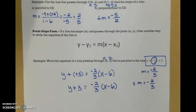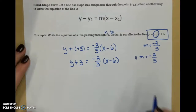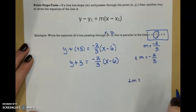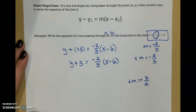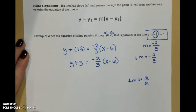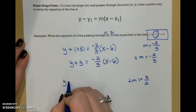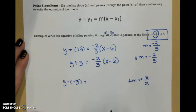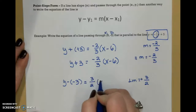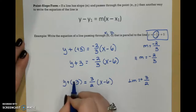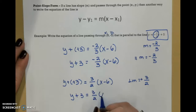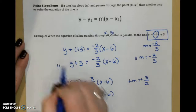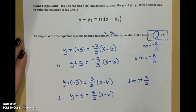My problem doesn't say to do this, but for practice let's also write the equation of the perpendicular line. My perpendicular slope would be the opposite reciprocal — I flip my fraction upside down and change the sign. It was negative, so it's going to be positive 3 over 2. If it goes to the same point, my points stay the same: y minus negative 3 equals 3 over 2 times x minus 6, which becomes y plus 3 equals 3 over 2 times x minus 6. So here is the equation for our parallel line, and here is the equation for our perpendicular line.